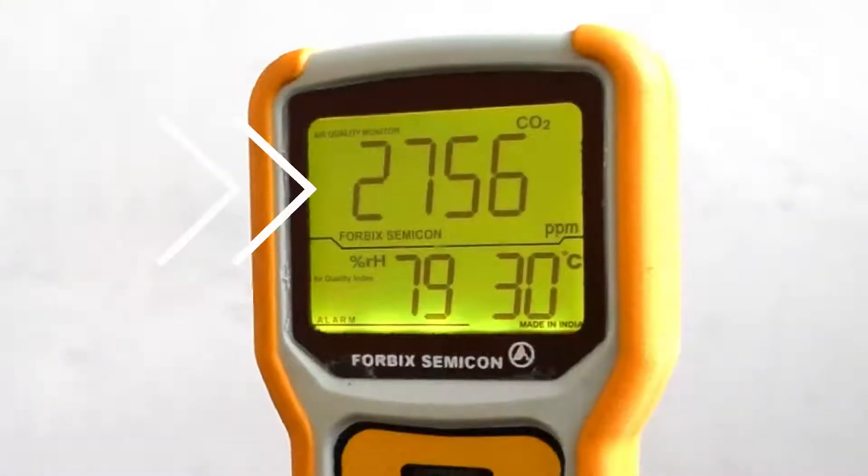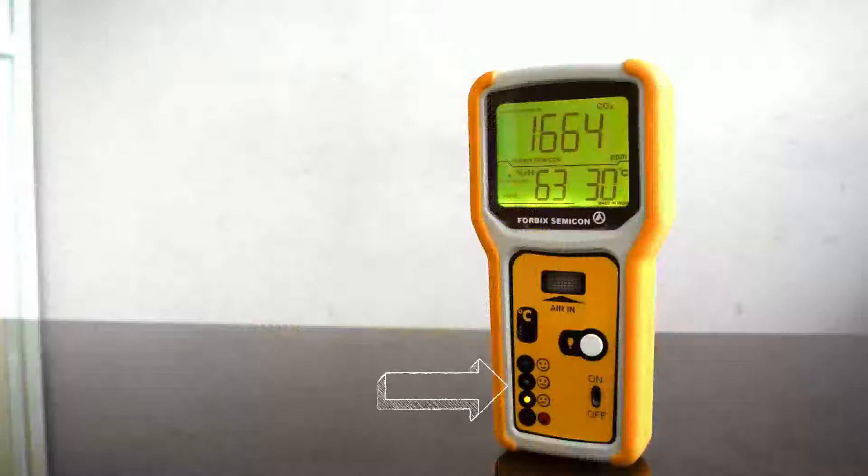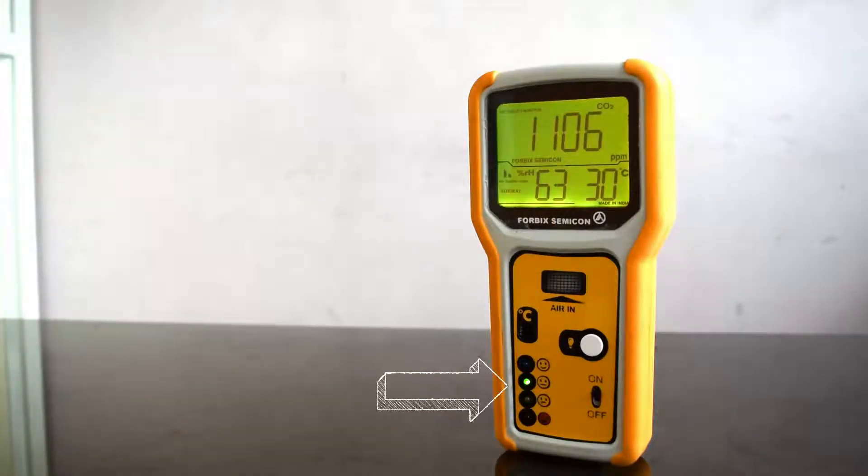The top values show carbon dioxide, whereas the denominator readings show temperature and humidity, respectively. As you can see now, how the CO2 level drops slowly.